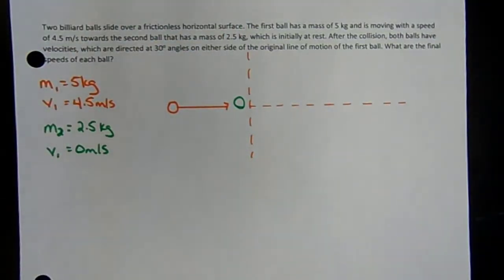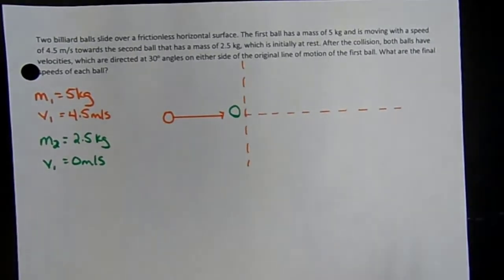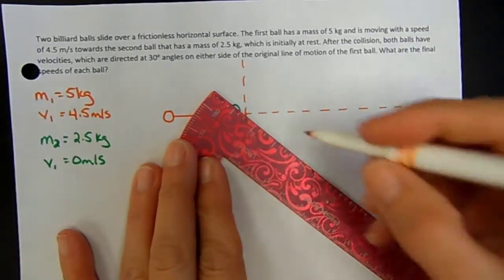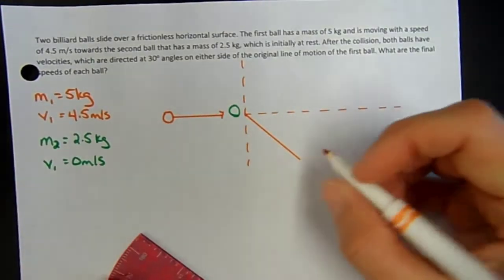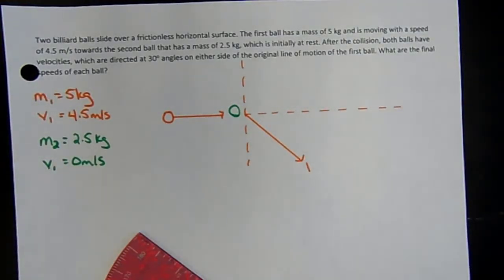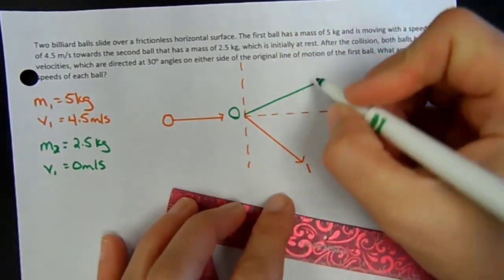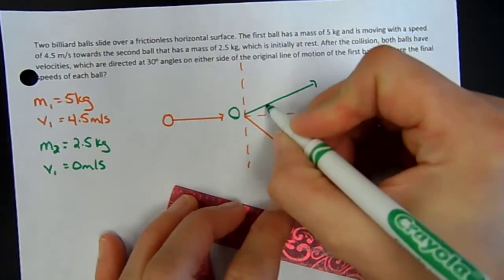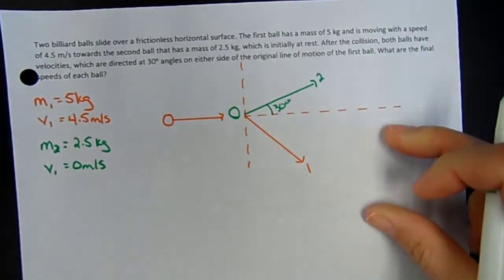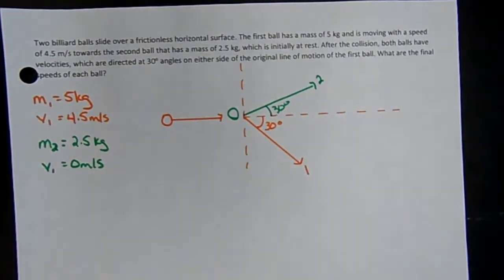After the collision, both balls have velocities directed at 30 degree angles on either side of the original line of motion. Let's say ball one goes off this way at a 30 degree angle, and ball two goes off at a 30 degree angle the other way. This angle here is 30 degrees for ball two, and this angle here is also 30 degrees for ball one.